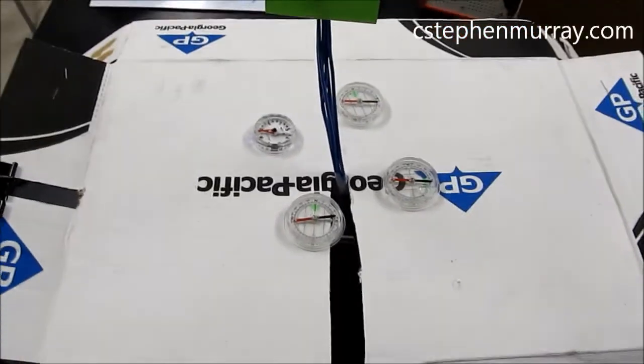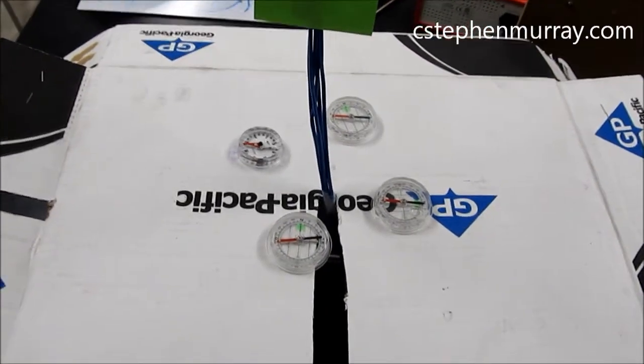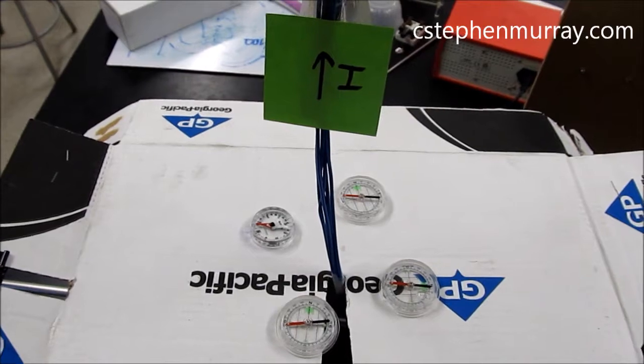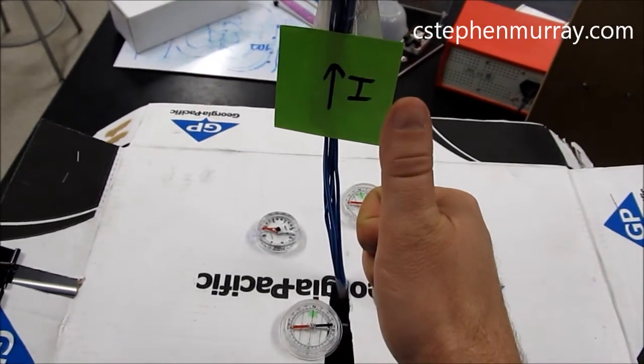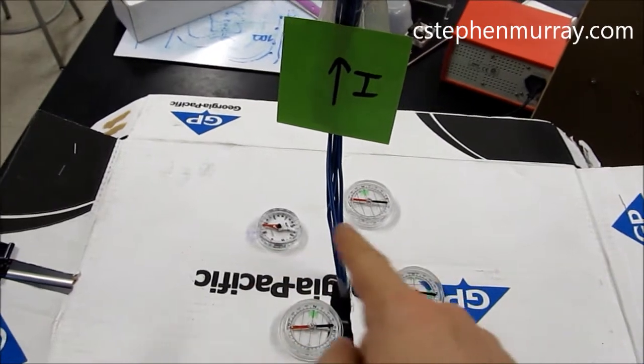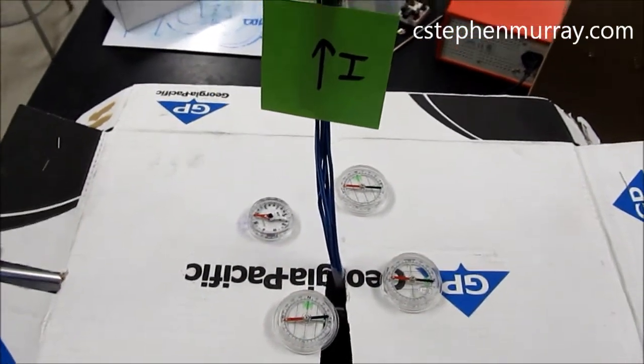I've reversed the current flow. Notice the compasses are again pointing towards the north pole in this room. The current is now flowing up in the wire, which causes the magnetic field lines to go in a circle around the wire, but in a counterclockwise direction.